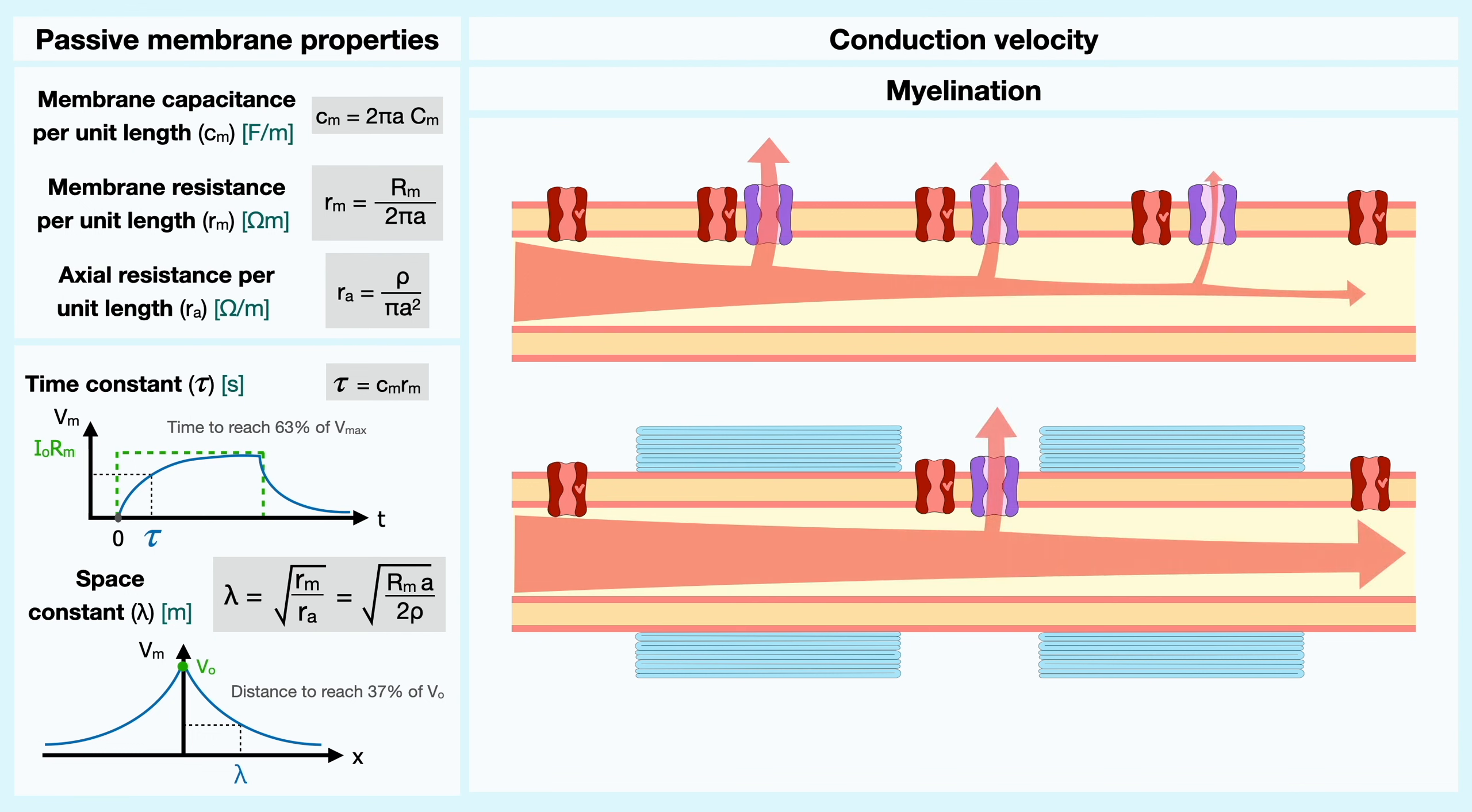First, remember that as current passively propagates, there is always some loss of current that is partially due to ionic leaks. In myelinated segments, there is essentially no possibility of leakage and as a result, the current is better maintained.